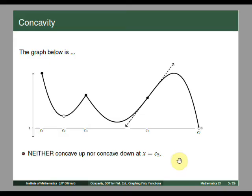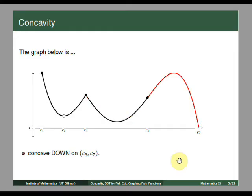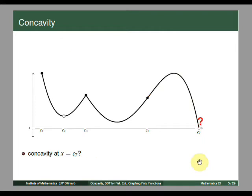From c3 to c5, it is concave up. On the other hand, from c5 to c7 — on the interval (c5, c7) — we have the graph is concave down, since all points between c5 and c7 have f concave down. At c7, we cannot talk about concavity because it is an endpoint.